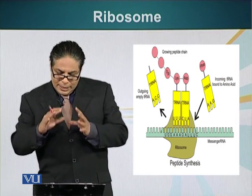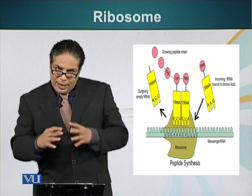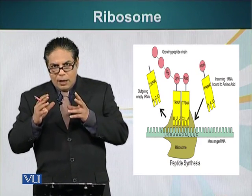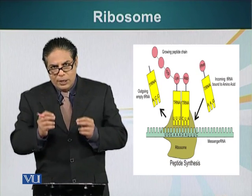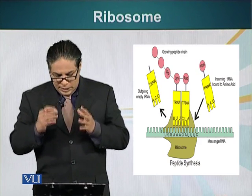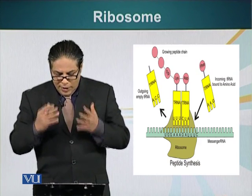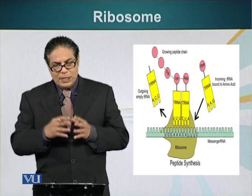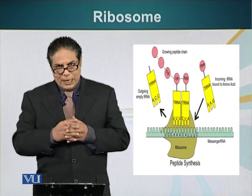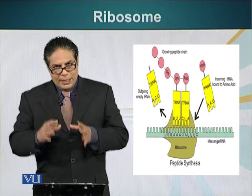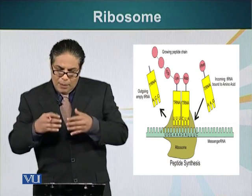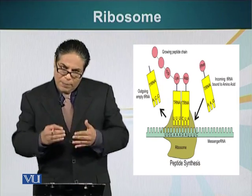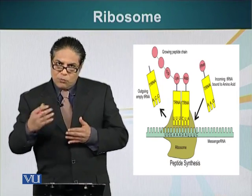When they realize the rule of complementarity has been followed, the amino acids carried on the transfer RNA molecules are linked together. As mentioned, this reaction is catalyzed by the RNA present in the ribosome, and a polypeptide chain starts forming.